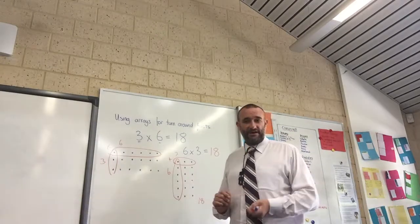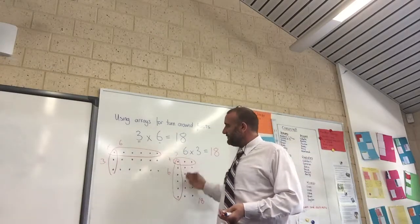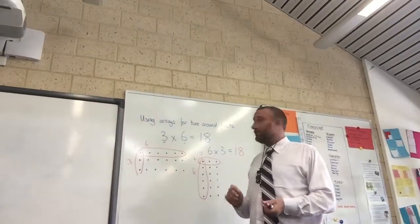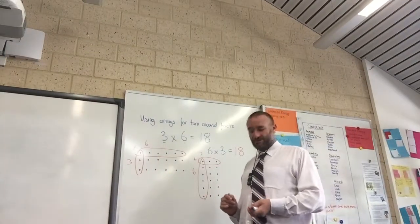So there's 2 times 5, 9 times 6. If you use your array, your turnaround facts, you'll be able to see how that relationship works.